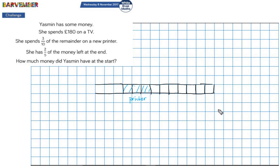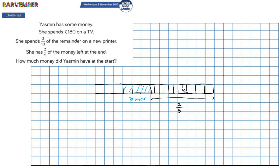She has two fifths of the money left at the end, which means the part remaining must be the two fifths. I need to work out how many pieces I have and make this into two fifths. It doesn't divide nicely into two with seven pieces, so what I'm going to do is divide each of these portions into two — and I'll have to do the same with the others as well.